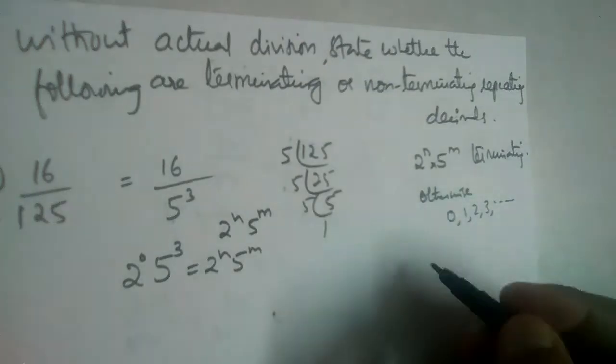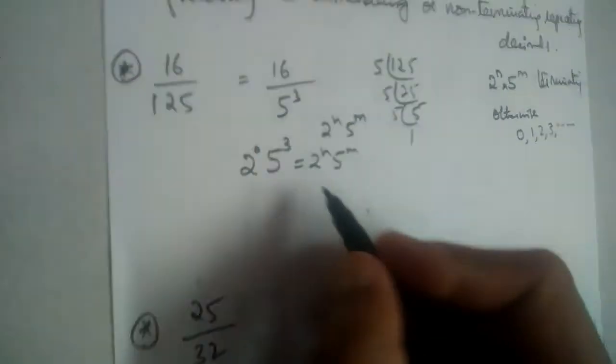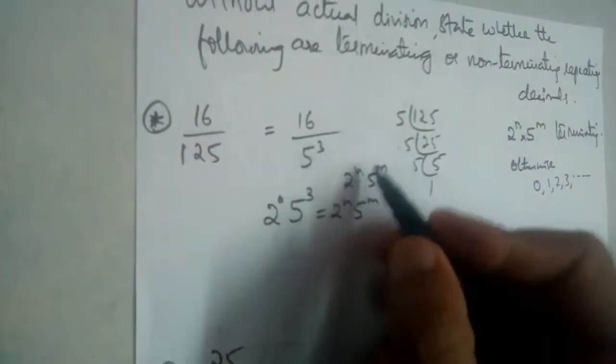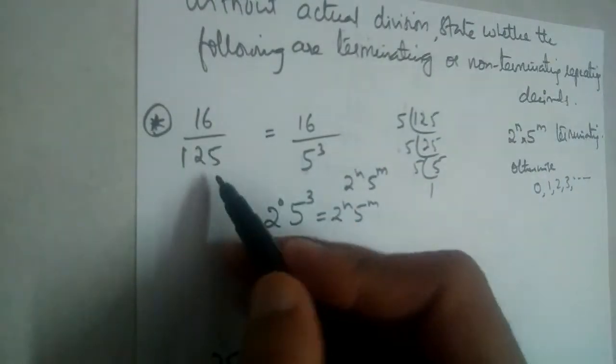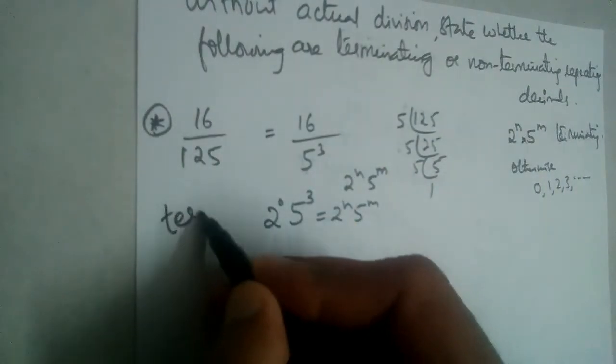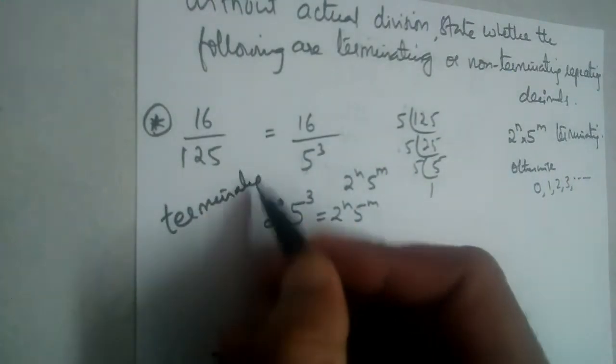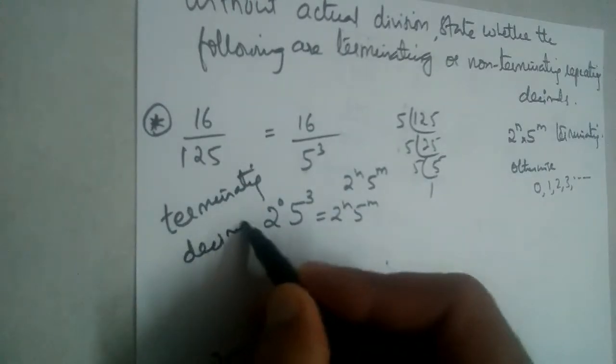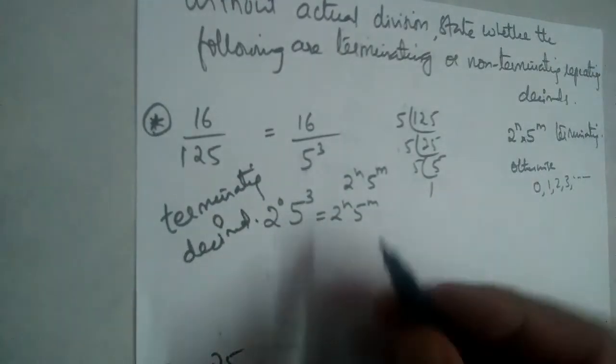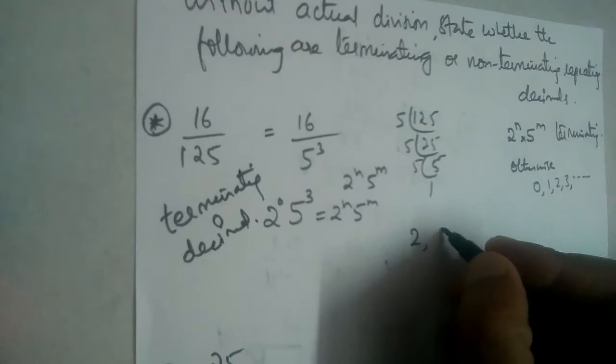n and m should not be negative. So here we have 5 cube. Is it terminating or not? 16 by 125, yes, it is a terminating decimal. We should have either 2 power something or 5 power something, or of this form—both 2 and 5.